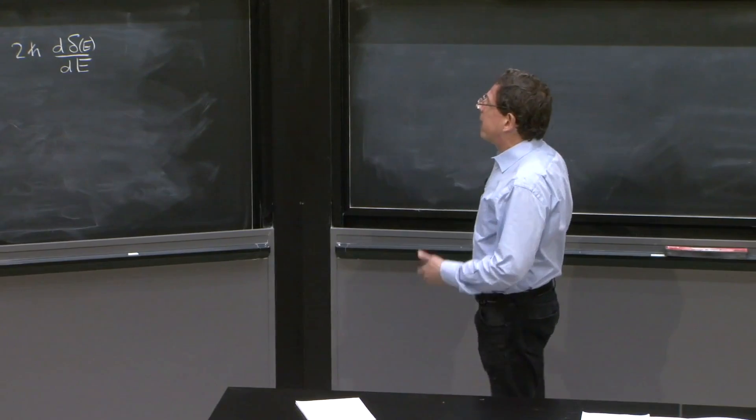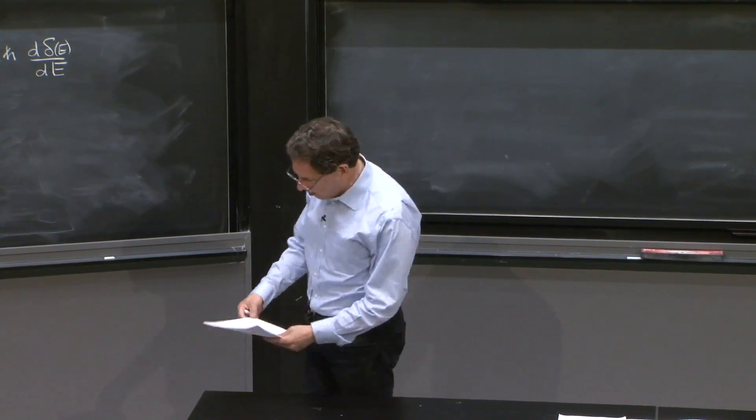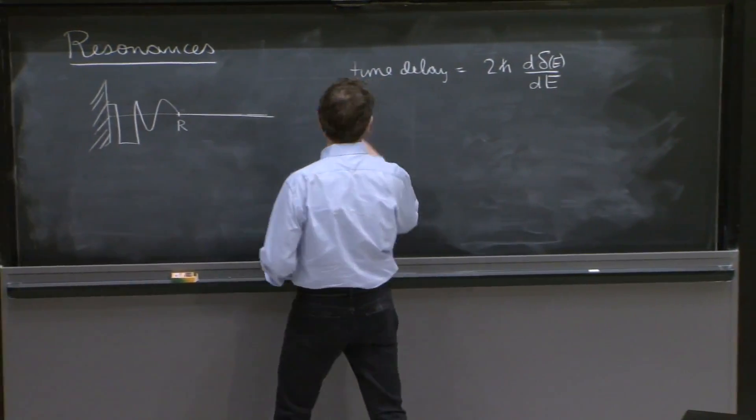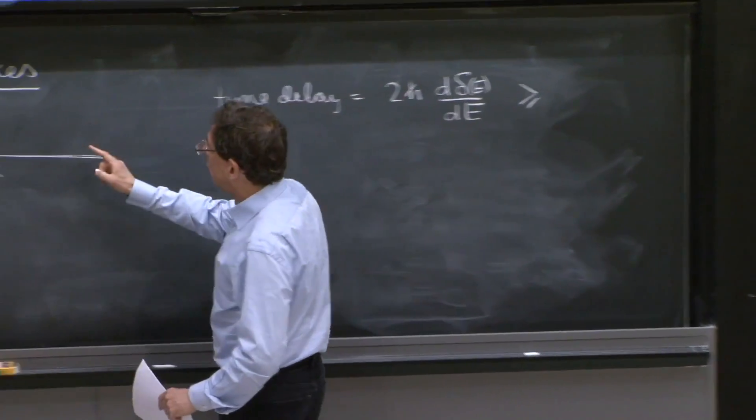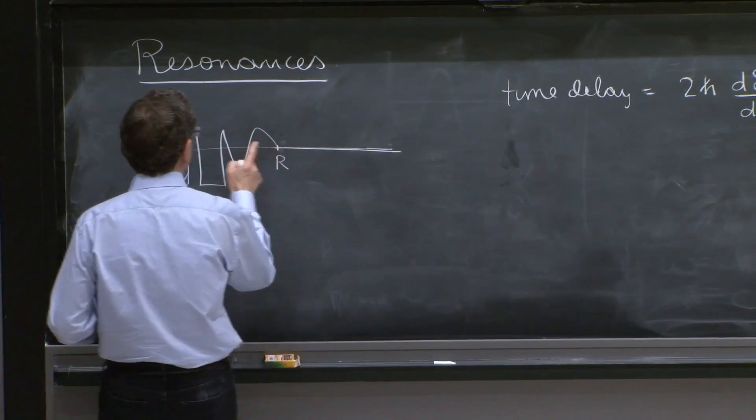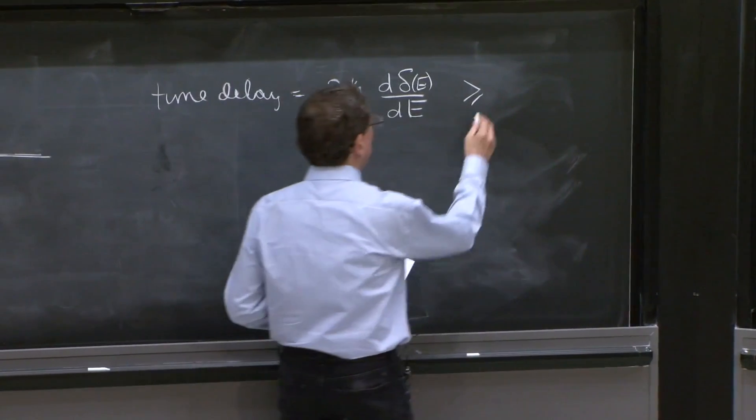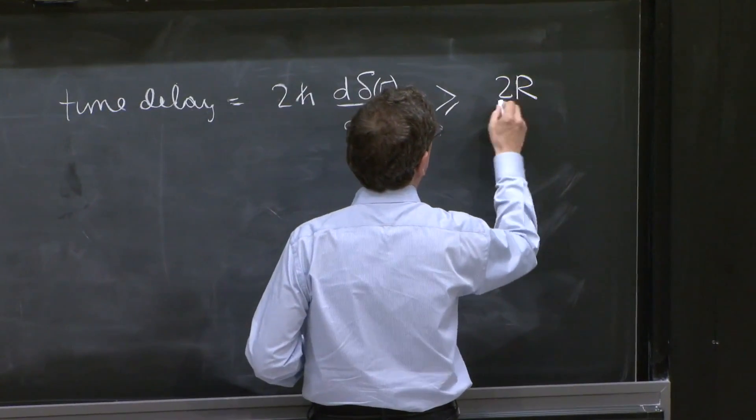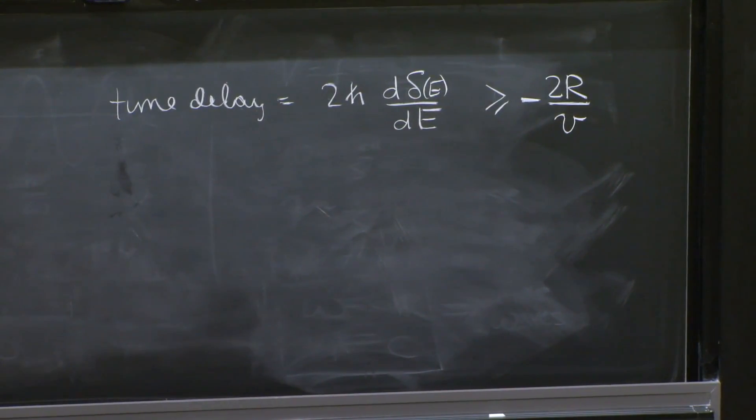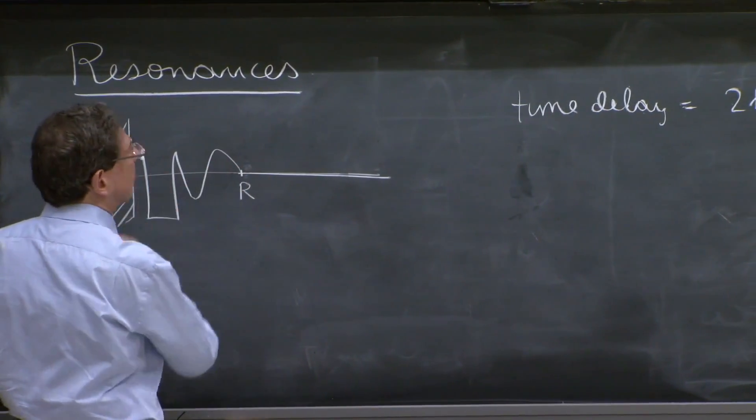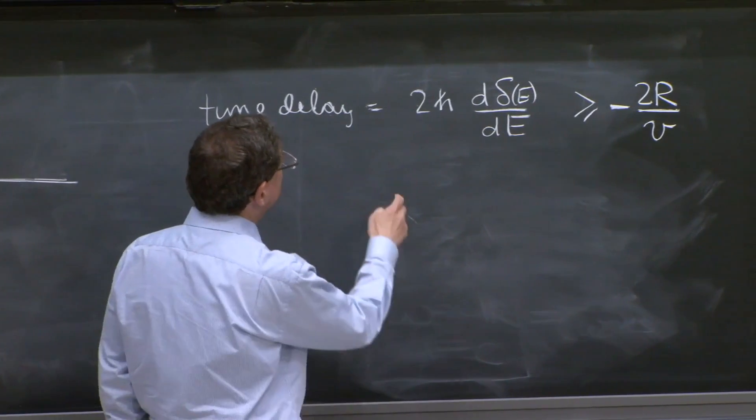So this is important. We cannot have a negative time delay that is infinitely large. In fact, the time delay should be greater than the total travel distance that you may save. If you bounce here, you would save 2r/v. And you must be greater than that negative number, which is the total travel time that it would take to go back and forth here.